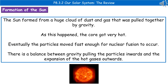The key thing in our solar system for us to actually exist, other than the Earth, is the sun. If we think about how our sun formed, it formed from a huge cloud of dust and gas that was pulled together by gravity. As they were being pulled together, it got very hot in the core, and eventually, as those particles were moving faster and getting hotter, they moved fast enough for nuclear fusion to occur, so they started joining together.